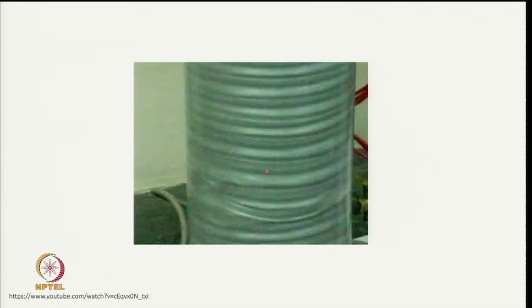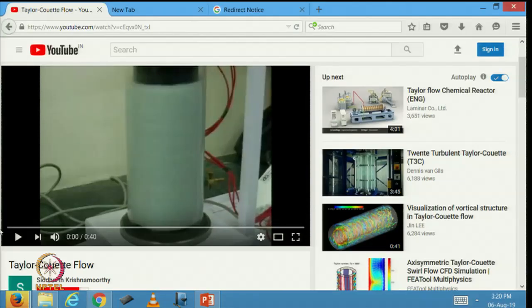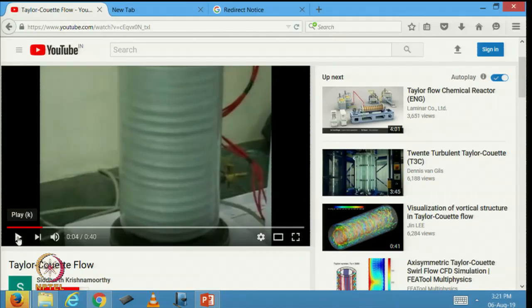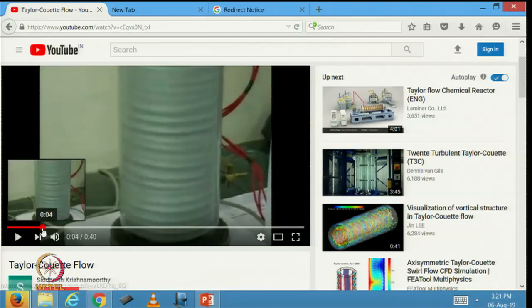Here is an example of the Couette flow in a laboratory at JNU. The apparatus consists of a plexiglass outer cylinder and a dark inner cylinder. The fluid enclosed between these two cylinders is a glycol solution and there is a fluid called kaleidoscope that has been added to make the flow visible. You can see this on YouTube by searching for Siddharth Krishnamurthy's name.